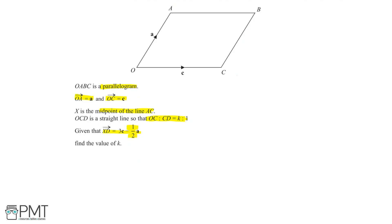We can start by labelling our diagram with the information given. Since OABC is a parallelogram, the line OC and the line AB are parallel to each other and the same length. Because they are both parallel and the same length, the vector OC equals the vector AB. So we label in the diagram that vector AB is equal to c. Using the same rationale, OA and CB are both parallel and equal in length, so the vector CB is equal to a.